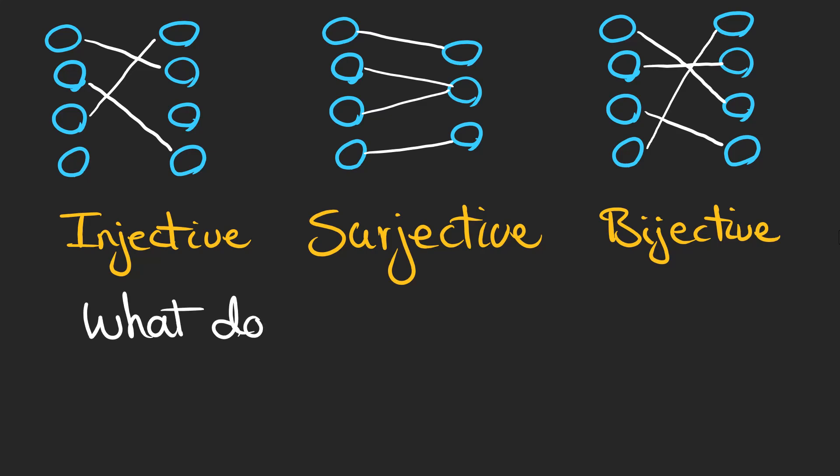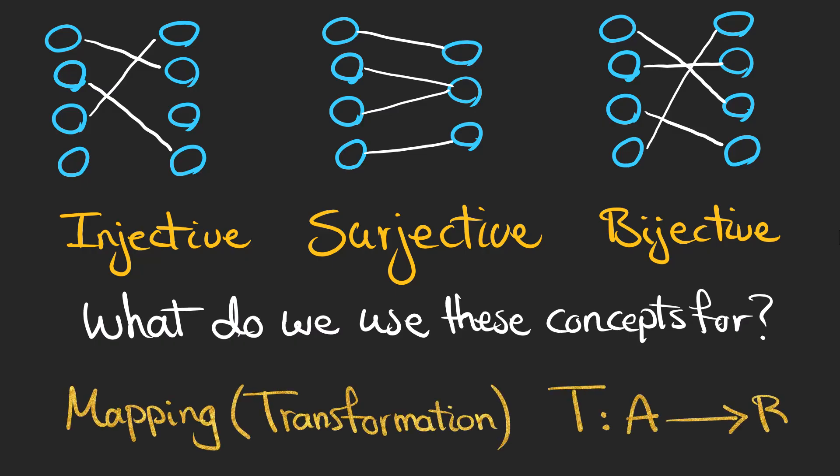The first question you might consider is: what do we use these concepts for? We are going to use these concepts for mappings or transformations, or in other words, how two sets A and B are connected. Meaning that if we define a kind of rule for the elements of set A, how do they connect to the elements of the set B on the right.